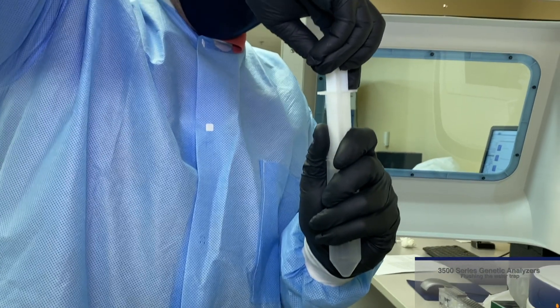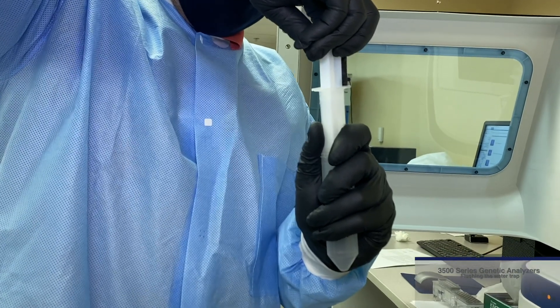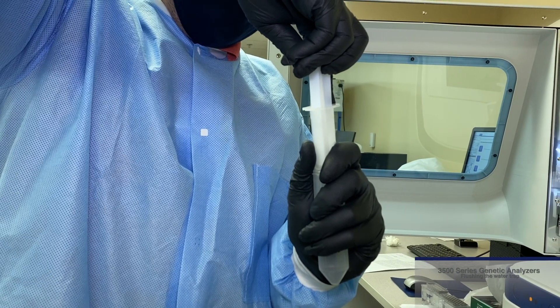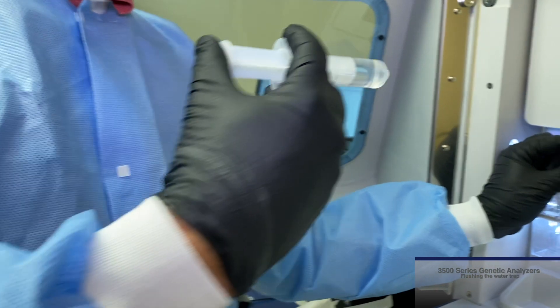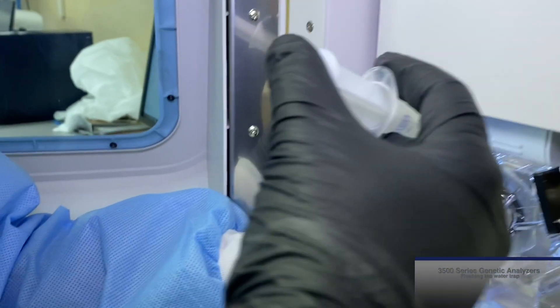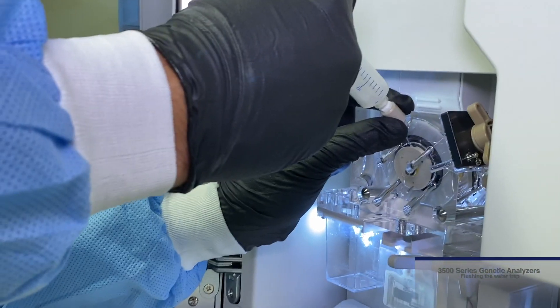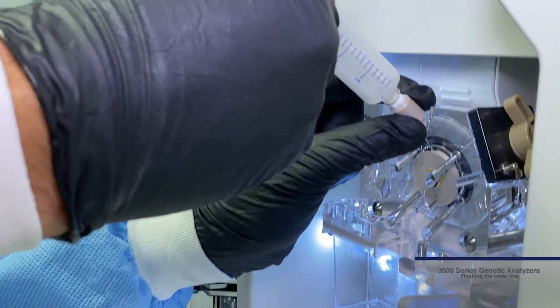Fill the syringe with distilled or deionized water and expel any bubbles from the syringe. Attach the syringe to the forward-facing lure fitting at the top of the pump block. Hold the fitting with one hand while threading the syringe on the fitting with the other hand.